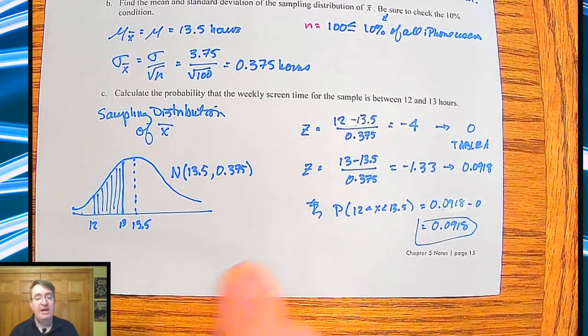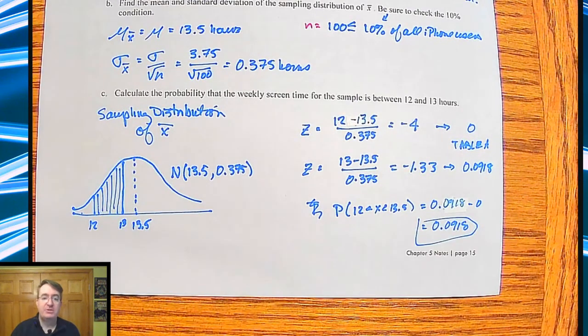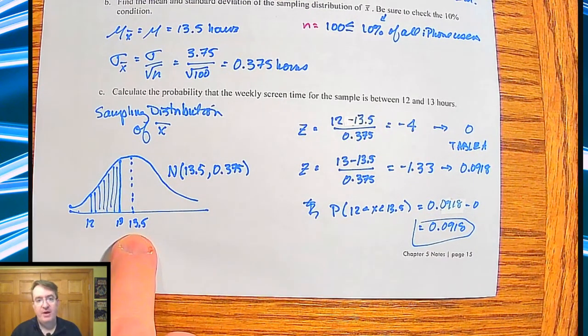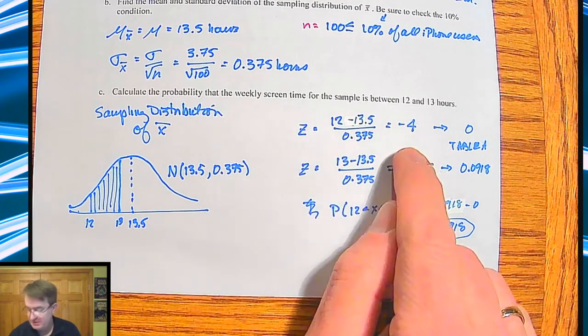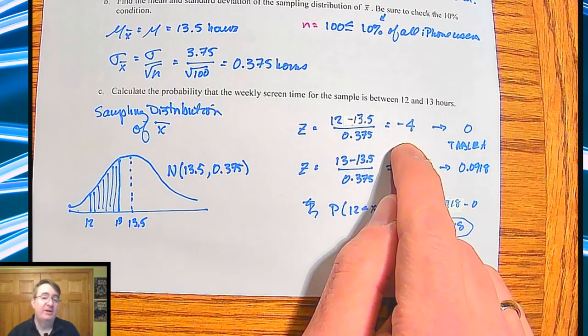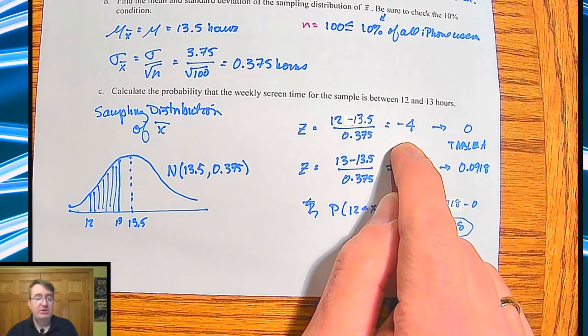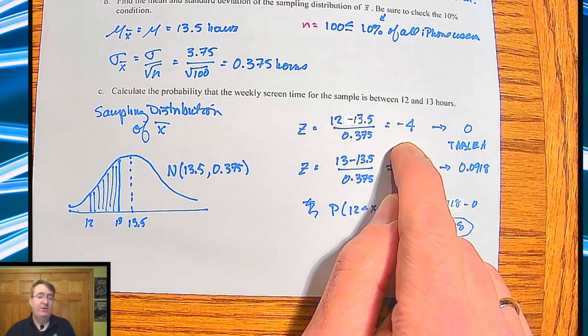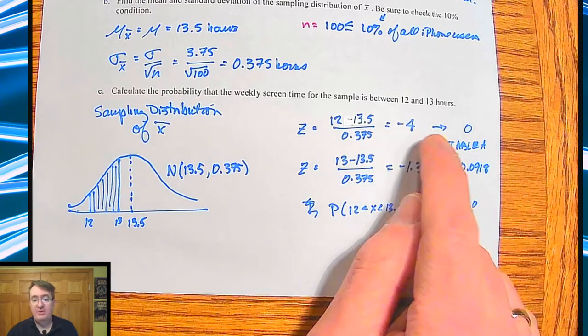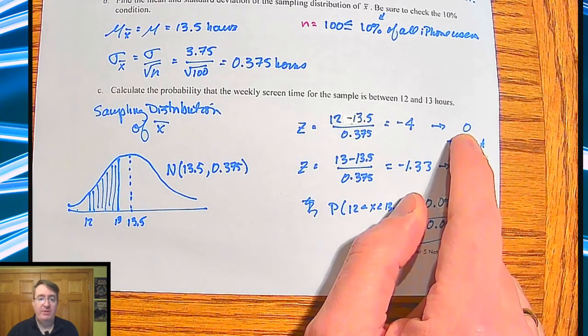So we calculate a z-score for the 12. And we get negative 4. So we already know. And this is the reason why calculating z-scores is important. 12 doesn't seem that far from 13.5. But since you're doing it with a z-score, you can say, wow, that is really kind of far by the time we take standard deviations into account. Negative 4 is way past negative 3. So that means it's not going to be very much. And in fact, if you look in table A, it actually has a probability of 0.